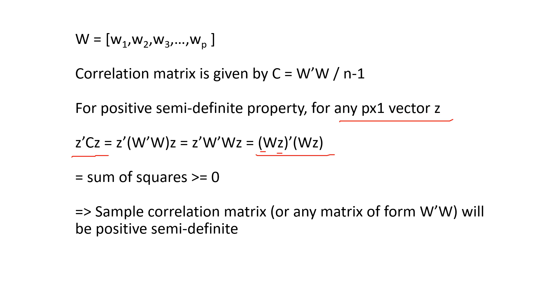Now W is n by p and Z is p by 1. So this would be a 1 by n vector and this would be an n by 1 vector. So this is an inner product of these two vectors which will give us the sum of squares, and sum of squares will always be greater than or equal to 0. So the quadratic form of matrix C is always greater than or equal to 0. So we know that this sample correlation matrix will always be positive semi-definite.